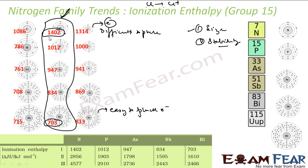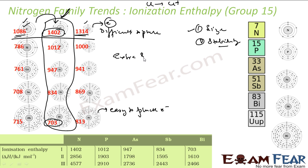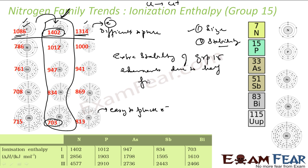From left to right across the period, size decreases, so typically more energy should be required to remove an electron. For example, comparing carbon and oxygen — carbon needs 1086 kilojoules per mole, and oxygen needs even more. But nitrogen breaks the trend: carbon needs 1086, nitrogen needs more than carbon, yet oxygen needs less than nitrogen. This is because of the extra stability of Group 15 elements due to the half-filled p-orbital.